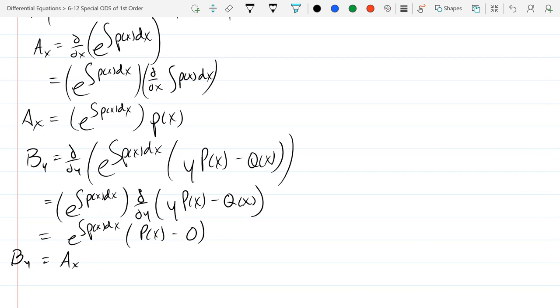So this is how we can make a linear ODE into an exact ODE. We use an integrating factor, and the integrating factor is this one right here. So we'll go ahead and solve two problems that are already linear in the linear ODE form.